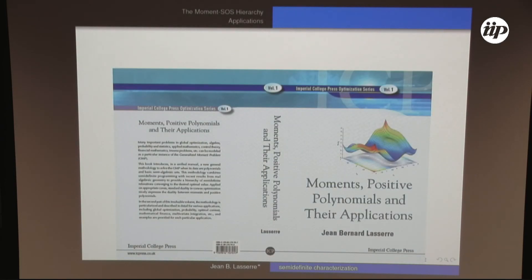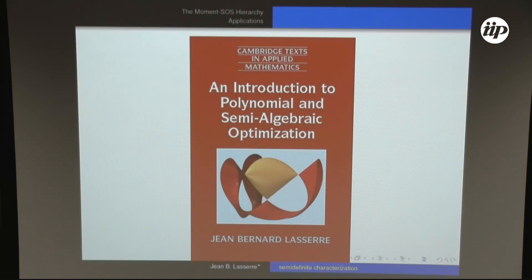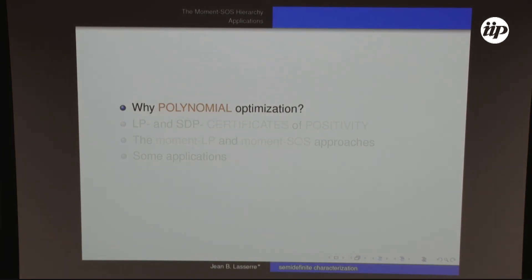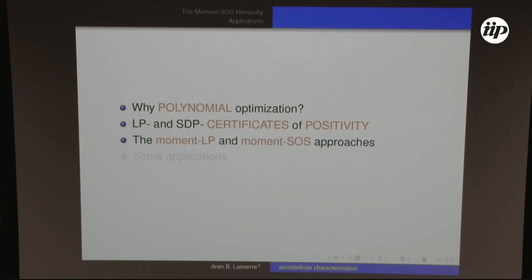Some material I present is contained in this book from 2009, and a more recent one related to algebraic optimization, as well as a nice collection of chapters. I'll start by explaining why polynomial optimization should be a specific topic compared to optimization in general, and present the LP and SDP certificates of positivity, the moment LP and moment SOS approaches — concentrating on the moment SOS approach, since the moment LP has some drawbacks.